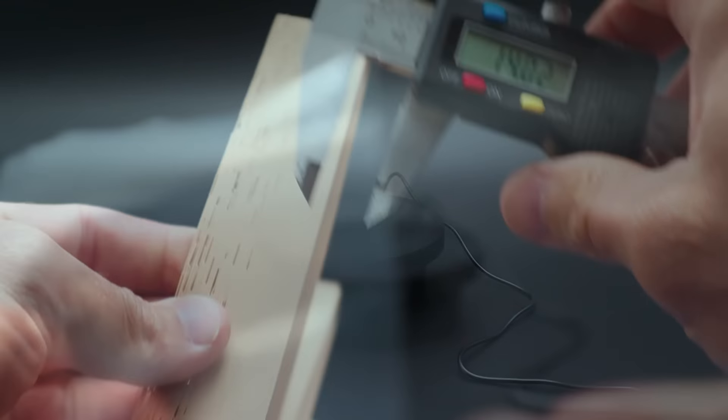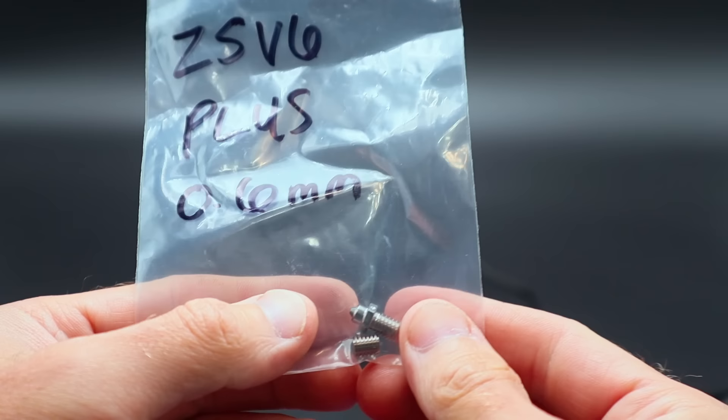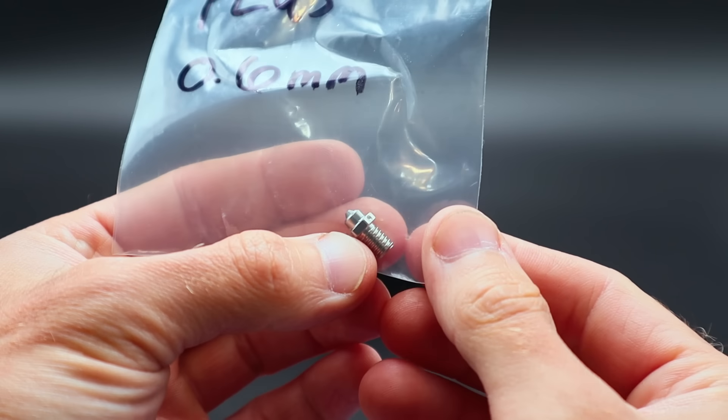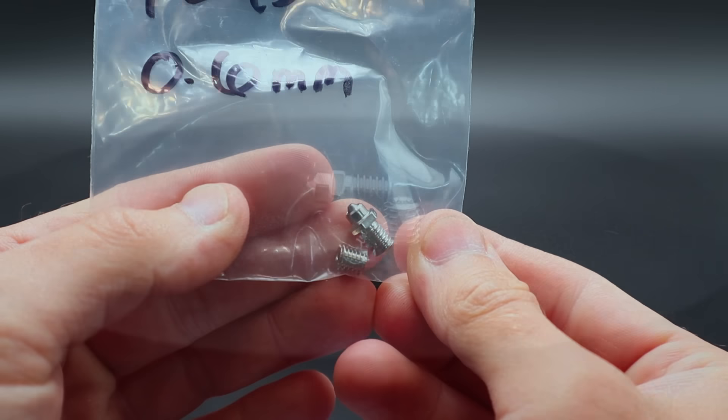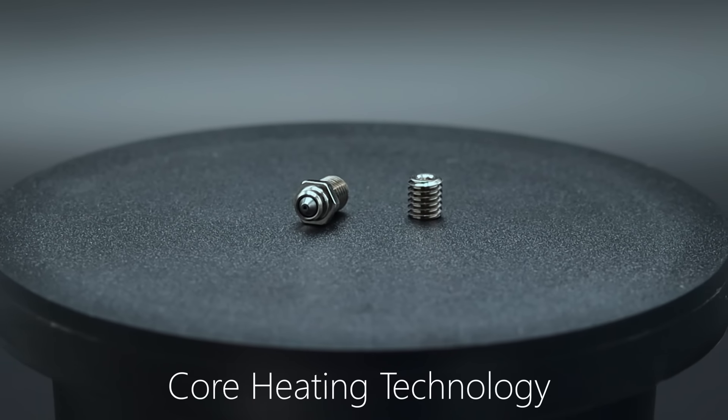All right, so this is what Triangle Lab has sent me. They're calling this the ZS V6, this is the plus model, the 0.6 millimeter, and you can see that there are two pieces. Let's open this up and have a closer look.